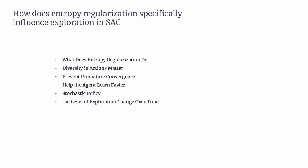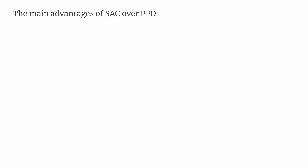Both Soft Actor-Critic, SAC, and Proximal Policy Optimization, PPO, are popular reinforcement learning algorithms, but they have distinct features that make them better suited for different types of tasks. Let's go over the key advantages of SAC compared to PPO. First, off-policy learning: SAC is an off-policy algorithm, meaning it learns from a replay buffer containing past experiences. This allows SAC to reuse old data and improve sample efficiency, especially in environments where generating new data is expensive or slow.